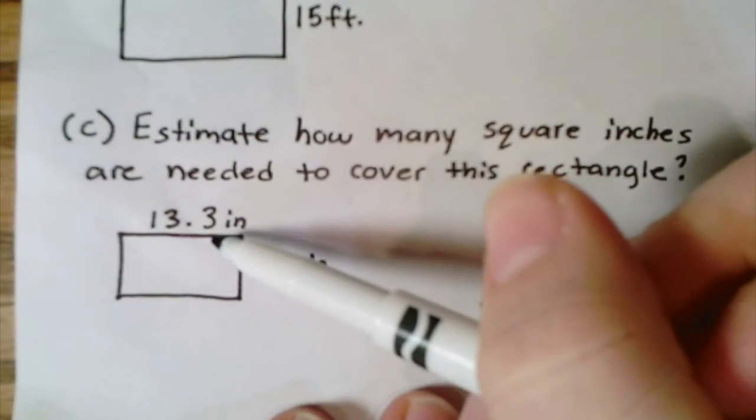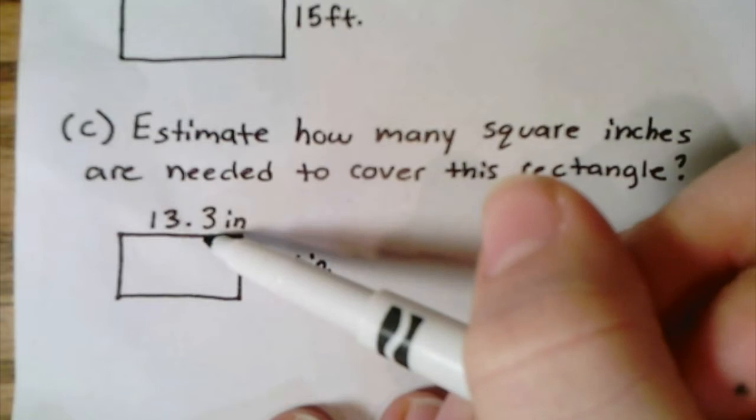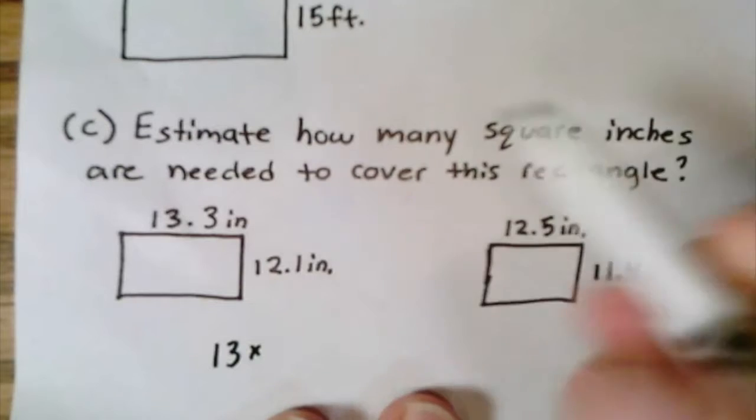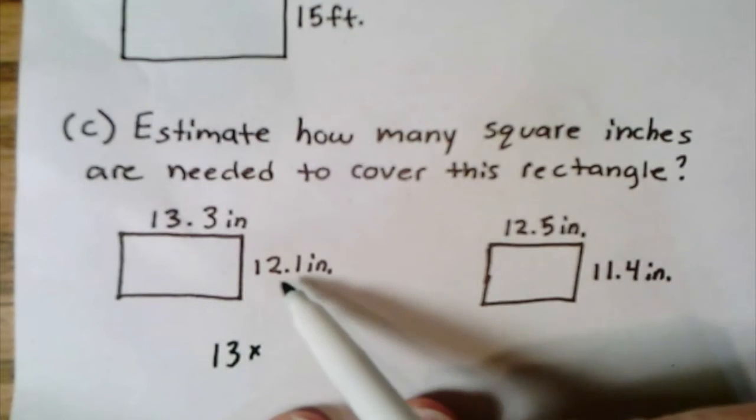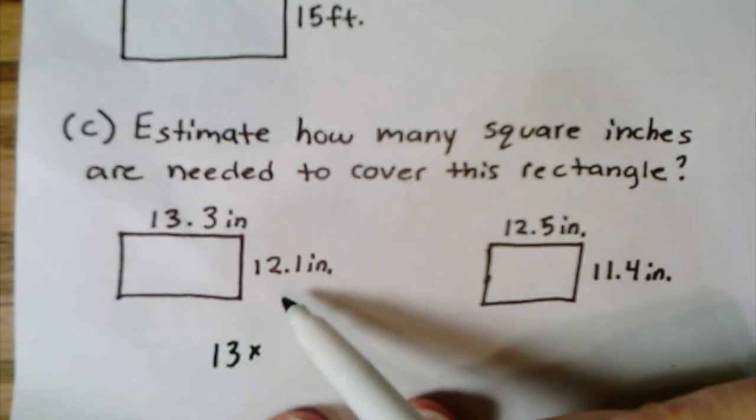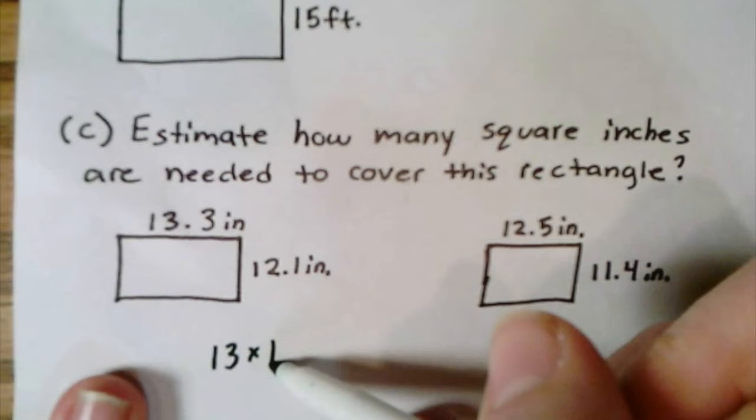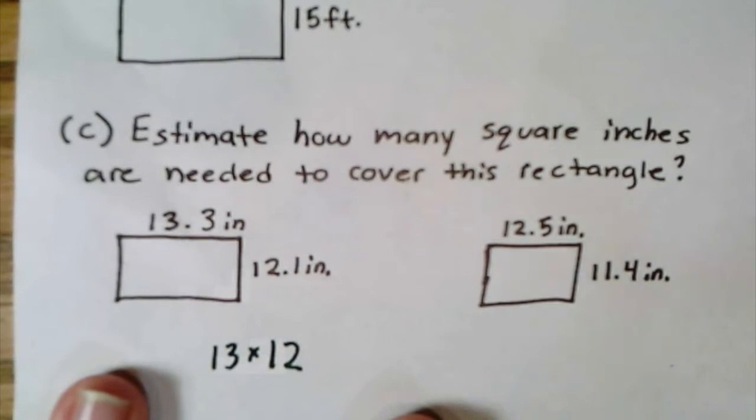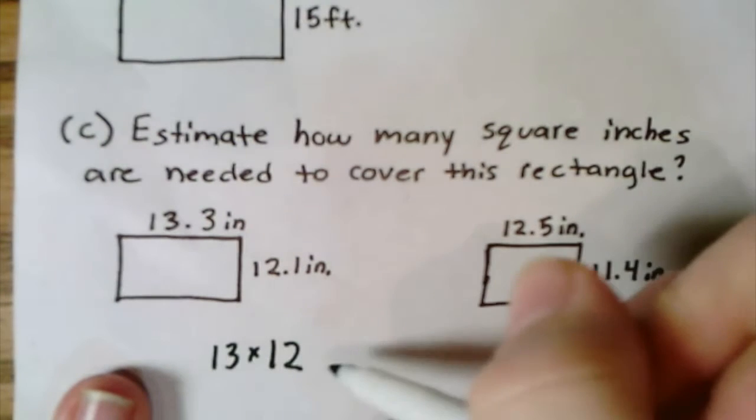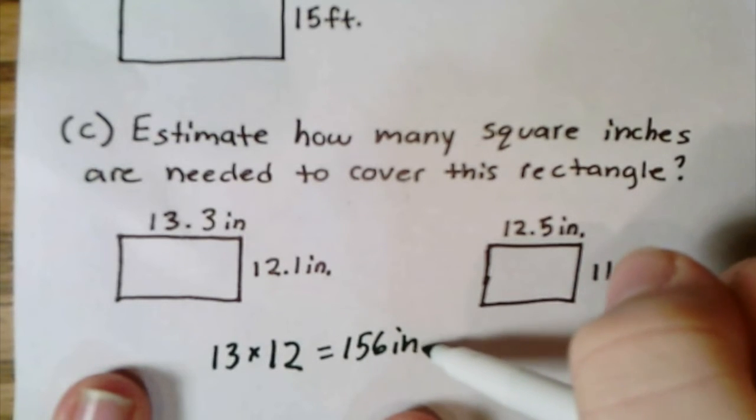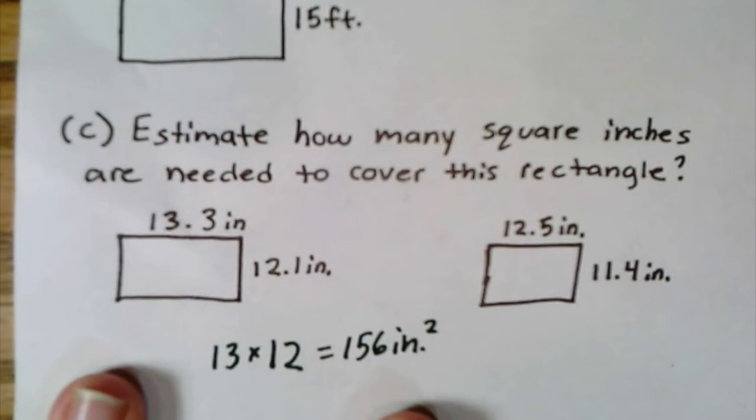Times—and then I have 12.1 inches. Is that going to round down or up? Good, it rounds down, so that becomes 12. Now I can do 13 times 12, which is 156, and I'll give it the label of inches squared. There you go, we would need 156 square inches.